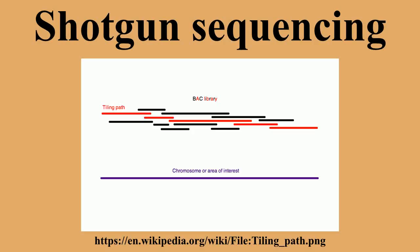Once the overlap between the clones has been found and their order relative to the genome is known, a scaffold of a minimal subset of these contigs that covers the entire genome is shotgun sequenced. Because it involves first creating a low-resolution map of the genome, hierarchical shotgun sequencing is slower than whole genome shotgun sequencing, but relies less heavily on computer algorithms. The process of extensive BAC library creation and tiling path selection, however, makes hierarchical shotgun sequencing slow and labor-intensive. Now that the technology is available and the reliability of the data demonstrated, the speed and cost efficiency of whole genome shotgun sequencing has made it the primary method for genome sequencing.